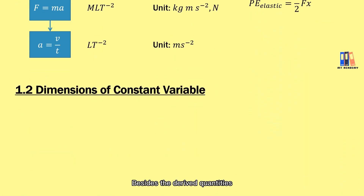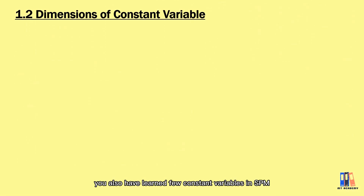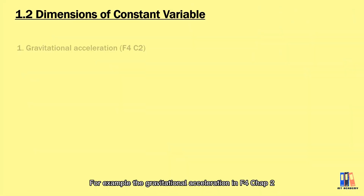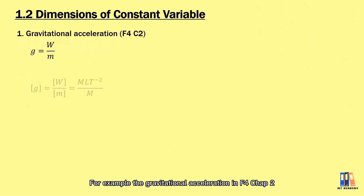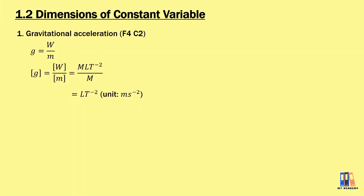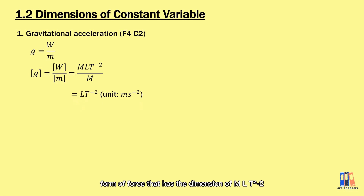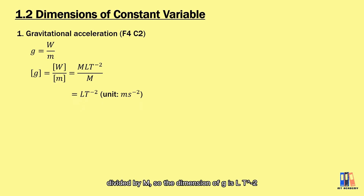Besides derived quantities, we have also learned about constant variables in SPM. For example, gravitational acceleration g from Form 4 Chapter 2. We have g = W/m, where weight is a form of force with dimension ML/T² divided by M. So the dimension of g is L/T², which is meter per second squared.